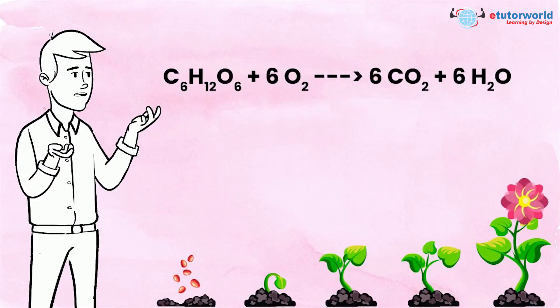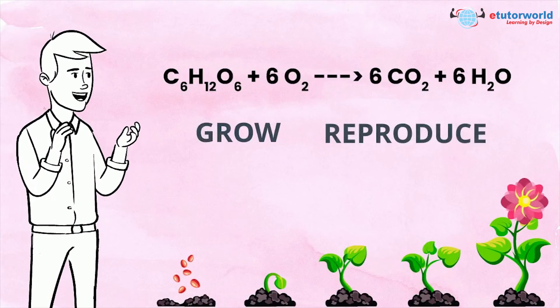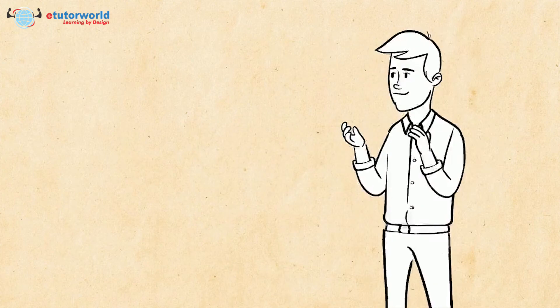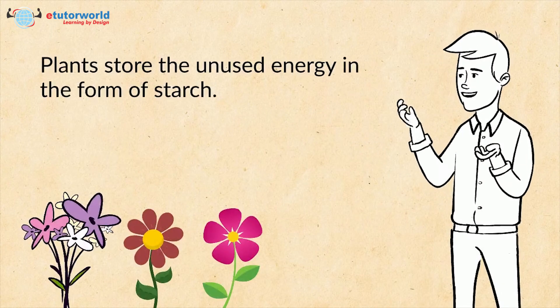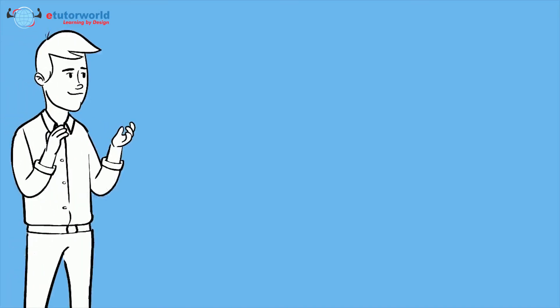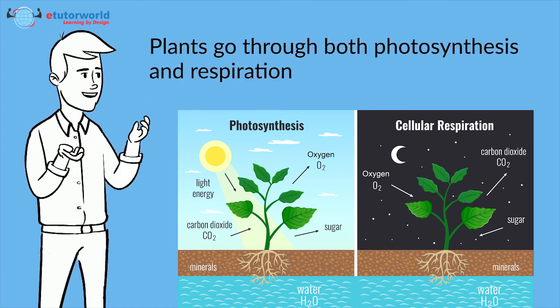Plants use some of this energy to grow, reproduce, and perform other life functions. Plants store the unused energy in the form of starch. Plants go through both photosynthesis and respiration.